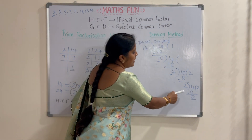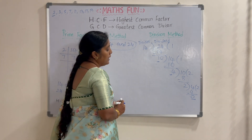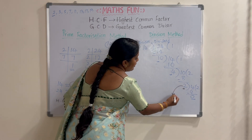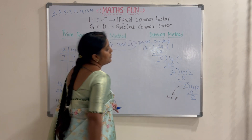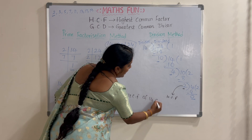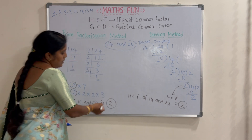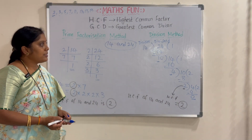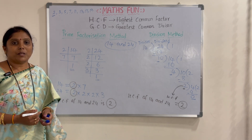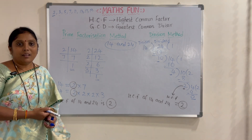This division continues until the remainder is 0. The last divisor we obtained is the HCF. So the HCF of 14 and 24 is 2. We got the same answer in both methods. This is how to find the HCF of two numbers using the prime factorization method and the division method.